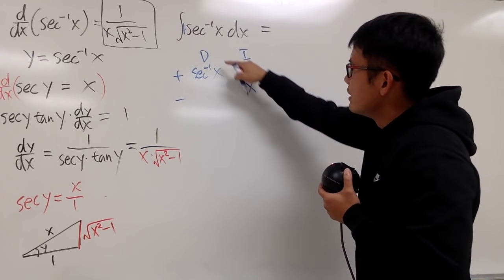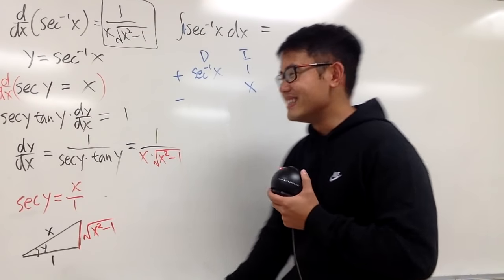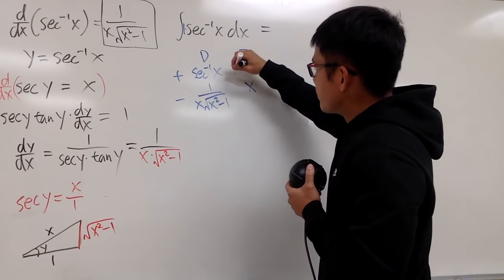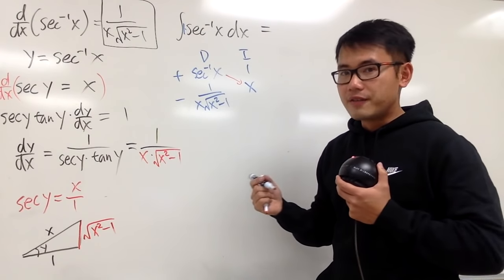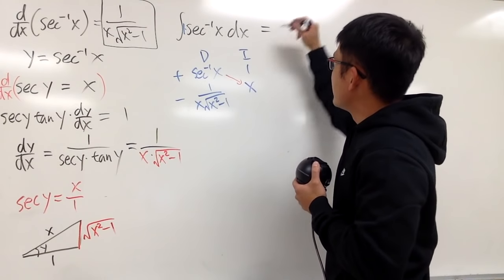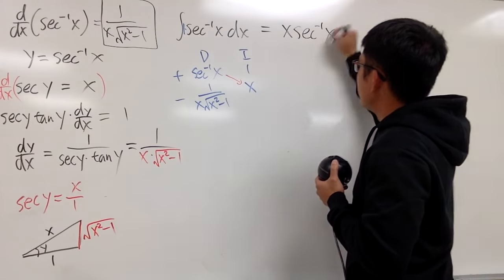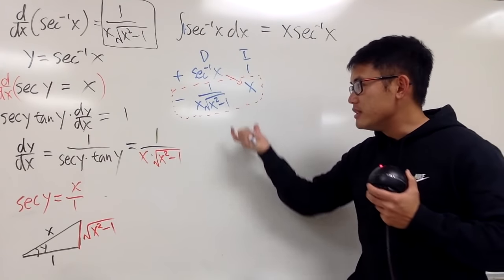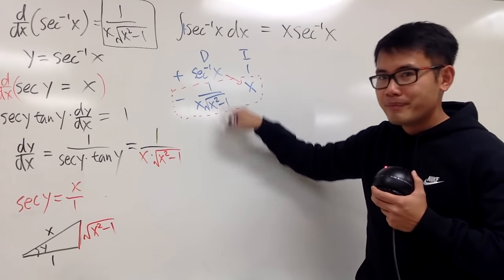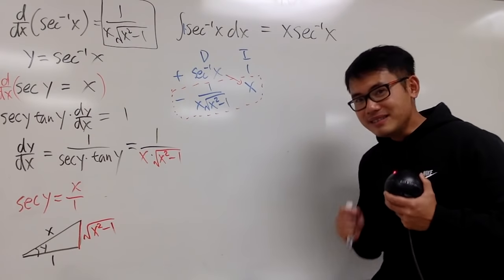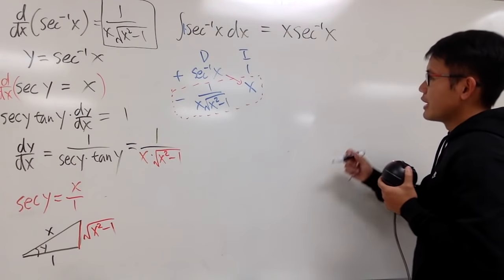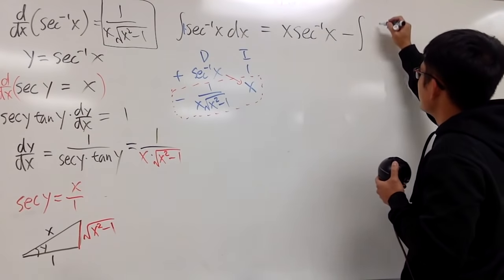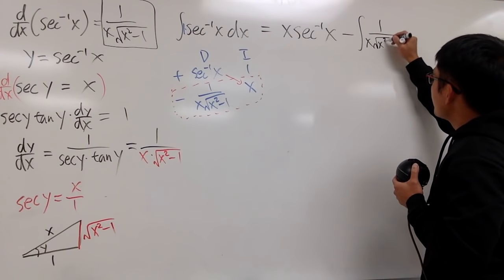Get to work: integrating 1, we get x. Differentiating inverse secant, we get 1 over x times the square root of x squared minus 1. Now we put things together. The product along the diagonal with the sign gives the first part of the answer: positive x times inverse secant of x. The product of each row is still an integral — a minus integral. So we have minus the integral of 1 over x times the square root of x squared minus 1, times x dx.